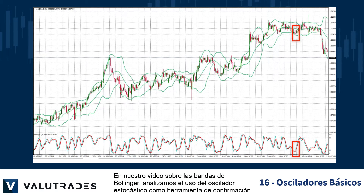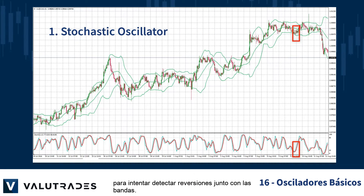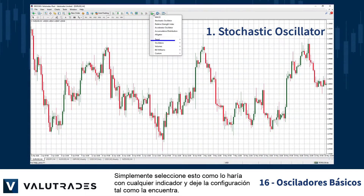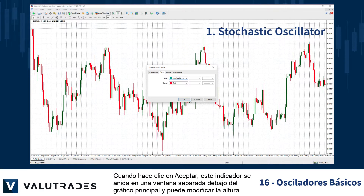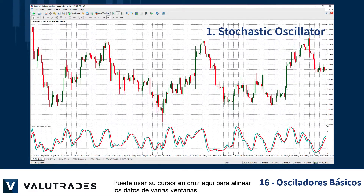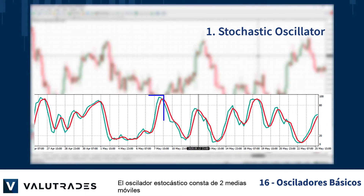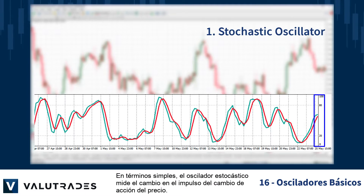In our video on Bollinger Bands, we looked at using the stochastic oscillator as a confirmation tool to attempt to spot reversals in conjunction with the bands. Just select this as you would any other indicator and leave the settings as you find them. When you click OK, this indicator nests itself in a separate window below the main chart and you may alter the height. You can use your crosshairs here to align the data across multiple windows. The stochastic oscillator consists of two moving averages which compare the closing price of each candle to a set period and plots the results between 0 and 100.